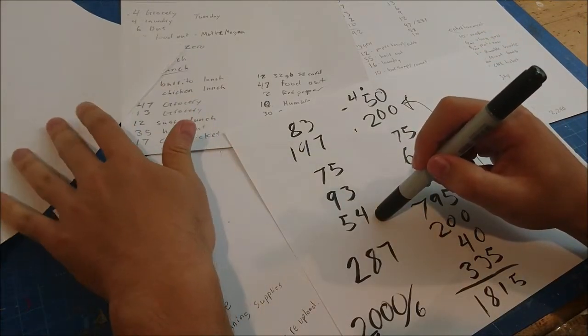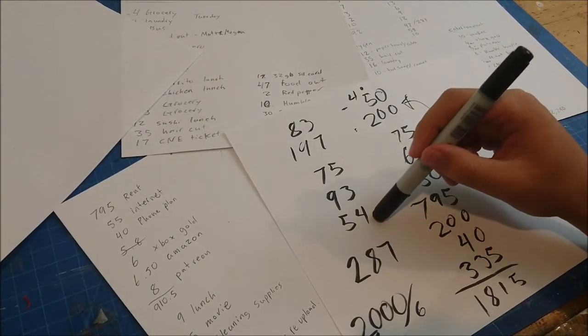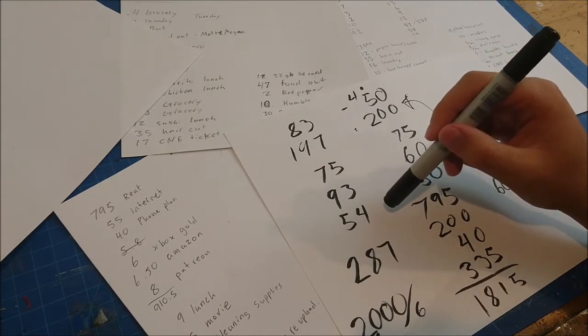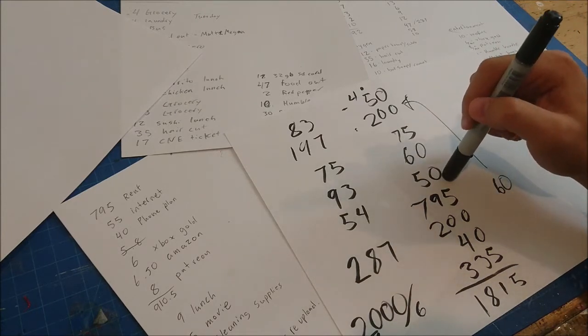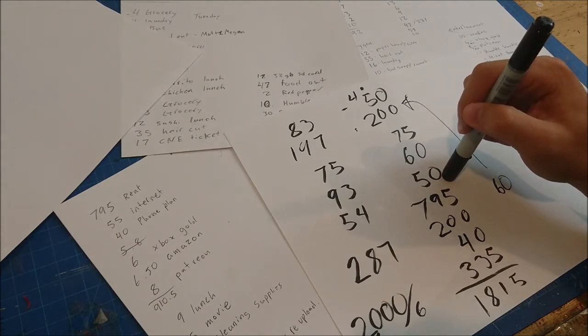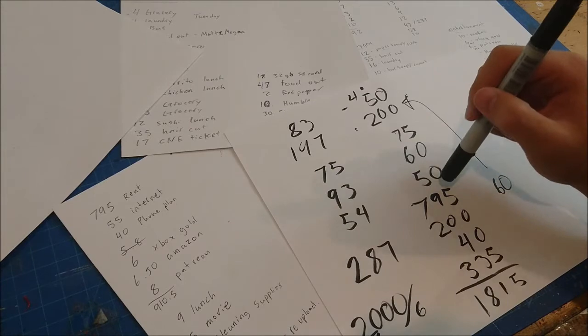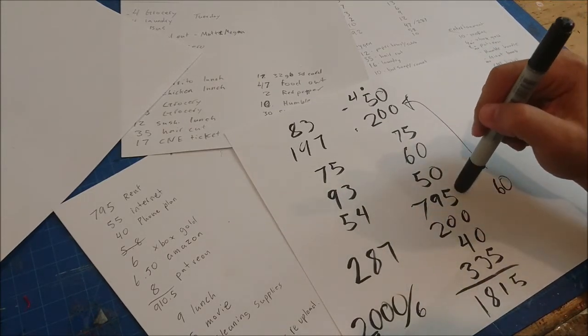Okay, $54 for general entertainment stuff. This was stuff like going to the movies, my Xbox subscription, buying a game. And I'm just gonna leave that at $50 because yeah, why not. And then here's $795 for my rent which is like what are you gonna do, that's how much that is.